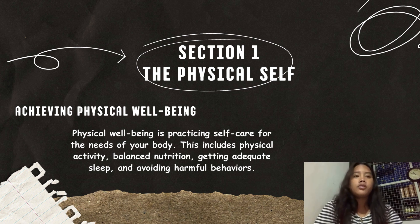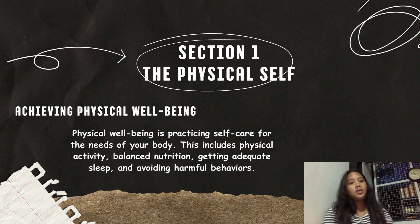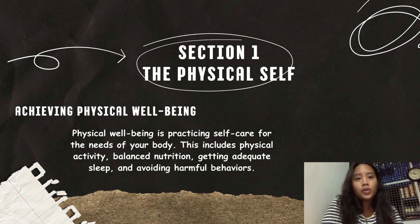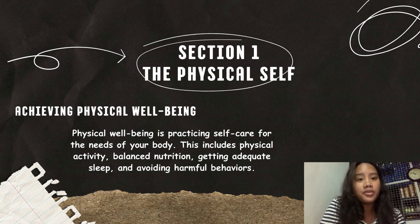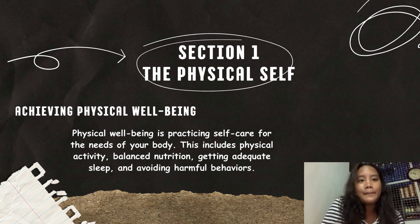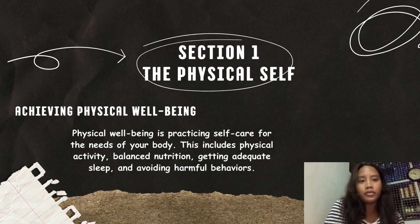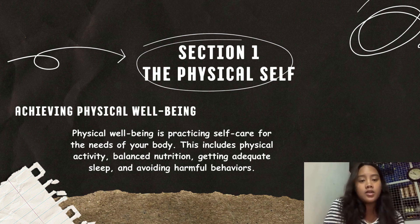This is Sarah, your reporter for Section 1: The Physical Self — Achieving Physical Well-Being. So, what is Physical Well-Being? Physical Well-Being is practicing self-care for the needs of your body. This includes physical activities, balanced nutrition, getting adequate sleep, and avoiding harmful behaviors. I would also tackle the branches of physical well-being.